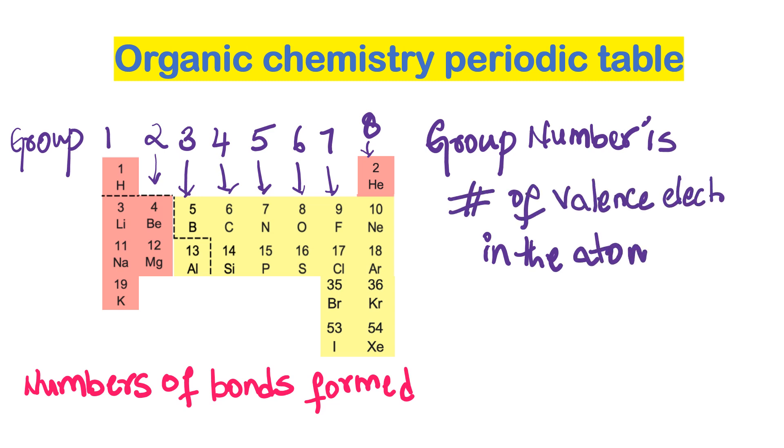The group number is actually the number of valence electrons present in the atom, or electrons present in the outermost shell of the atom.